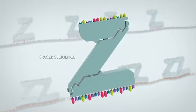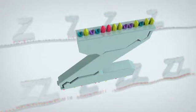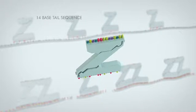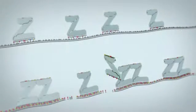A spacer sequence links the lower region to an upper region. The two tails from a double Z probe pair form a 28-base binding site for the pre-amplifier.